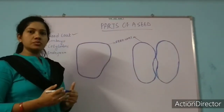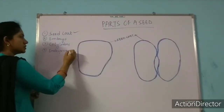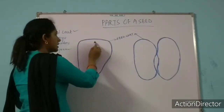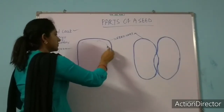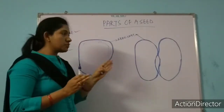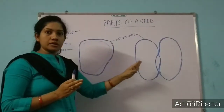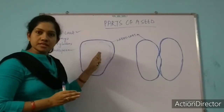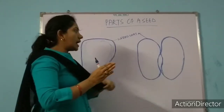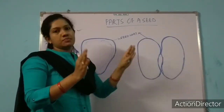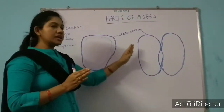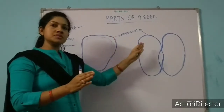After the seed coat, there is a layer called endosperm. One important difference: in monocot seeds, the endosperm is visible and can be identified. But in dicot seeds, the endosperm is not clearly distinct or visible. The function of endosperm is to nourish the embryo.